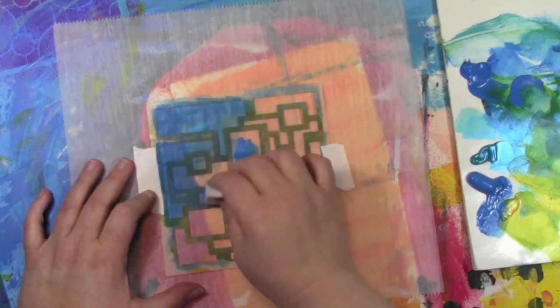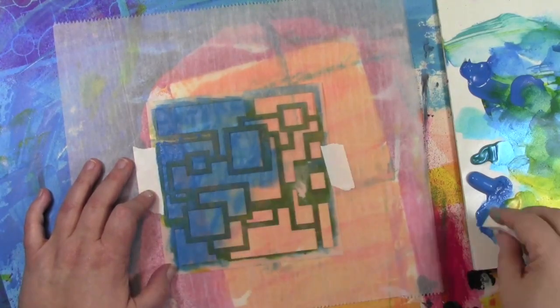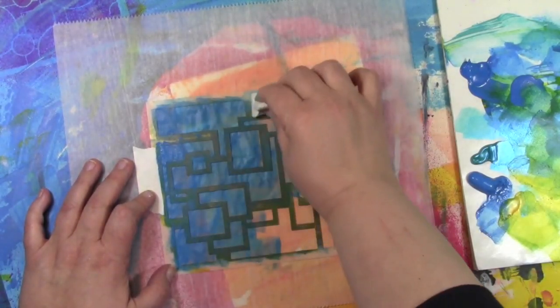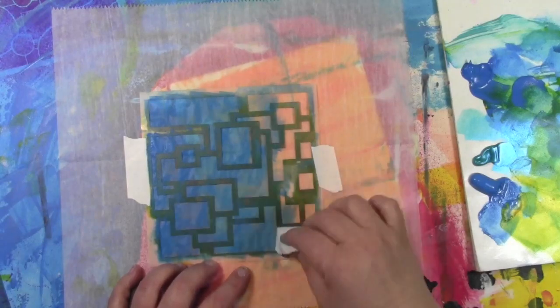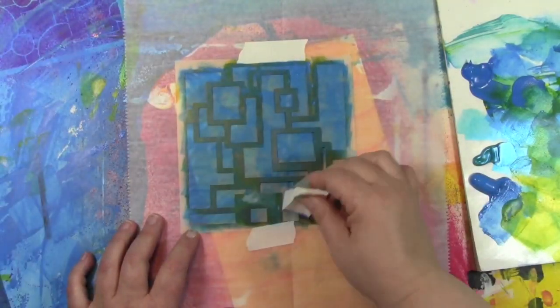The stencil is called Blueprints of Archaeological Treasures, 6x6 size. The name probably gives you an idea of where the inspiration came from. When I designed the stencil, whenever I'm traveling to archaeological sites, one of the things...